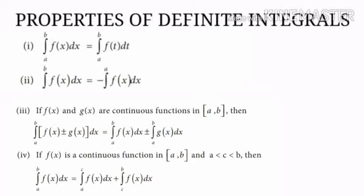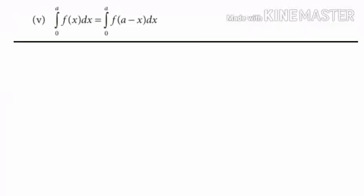The fourth property says the integral from a to b of f(x) dx is equal to the integral from a to c of f(x) dx plus the integral from c to b of f(x) dx. The fifth property is the integral from 0 to a of f(x) dx is equal to the integral from 0 to a of f(a minus x) dx.